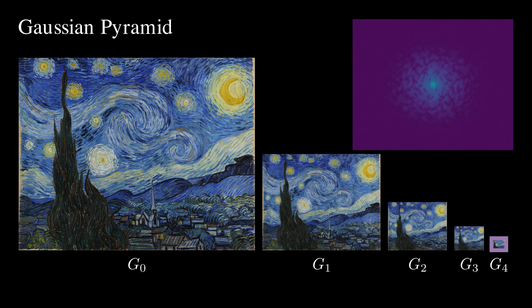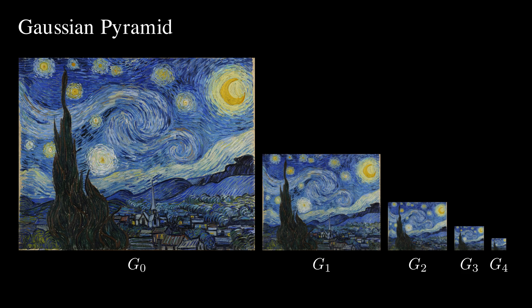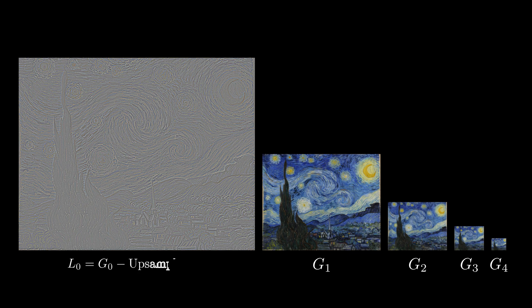To blend images at different frequencies, we need a representation that captures different frequency ranges. To do so, we compute a residual image. The difference between an image at one level and its upsampled version from the next level. This image L0 captures the high-frequency details present in G0 but not in G1.